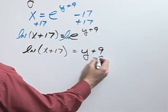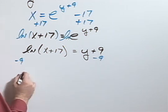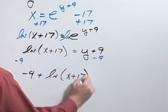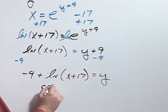Next, subtract 9 from both sides. So negative 9 plus the natural log of x plus 17 will equal y. I can rewrite that so that...